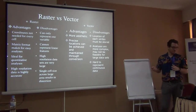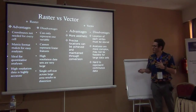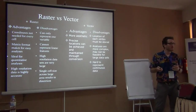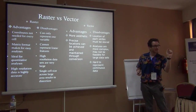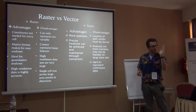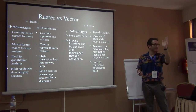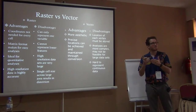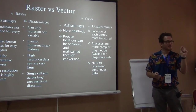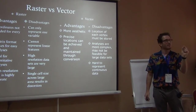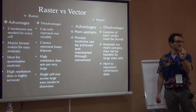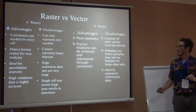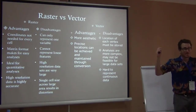In general, raster versus vector each has advantages and disadvantages. With raster, you don't need a coordinate for each cell — you only need to know where the first cell is, and then put each subsequent cell in a row after that. You don't need to store a coordinate for every cell because you know where the first cell is and that the next cell is five meters to the east. This helps save a lot of space with really big data sets.